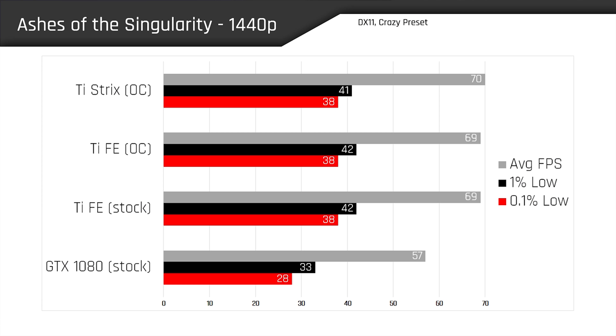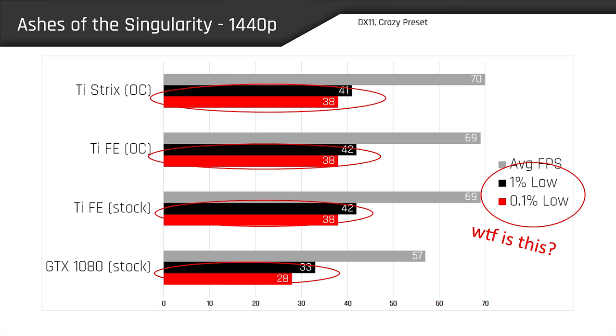What's up, guys? Welcome back. Hope you're doing well. Some of you may have noticed that I recently switched up my benchmarking methodology about several weeks ago by discontinuing the presentation of minimum frame rates in favor of 1% and 0.1% lows. But since then, I've seen a lot of confusion in the comments as to what exactly these metrics mean. So today, I'm going to explain what they are and why you should care about them.